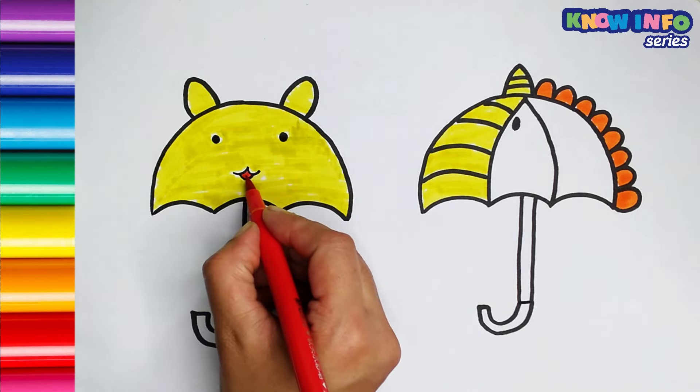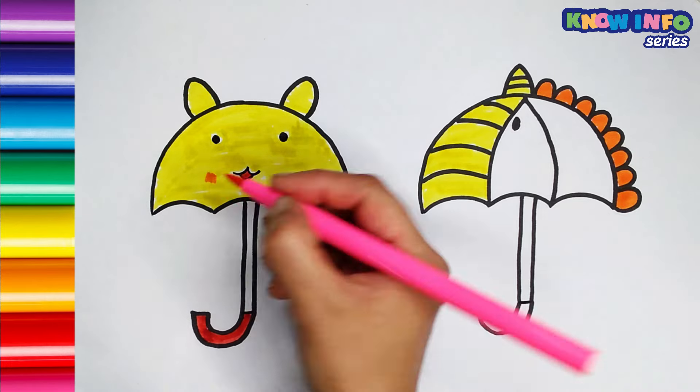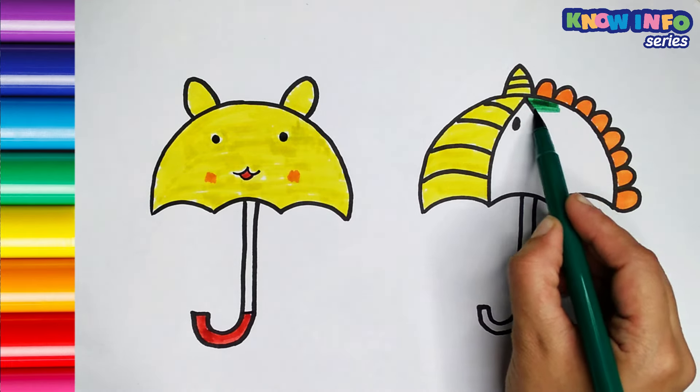Add some red color on the tongue. Pink color to make some blush on the cheeks. Add some contrast with green color.